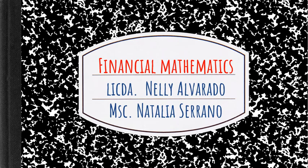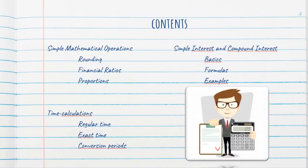Let's take a look at the things that we will see in this unit. We are going to see what the simple mathematical operations are. We have already covered a little about the order, how to make the numbers correctly, how to do them in Excel. Then, we are going to jump into rounding, financial ratios, proportions.